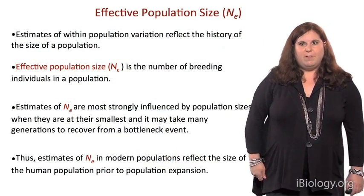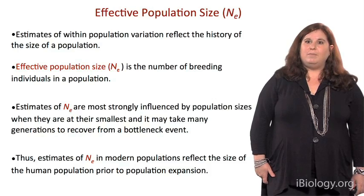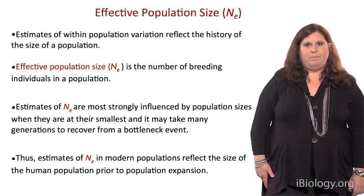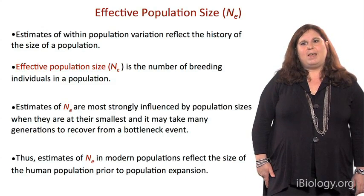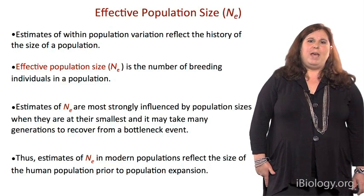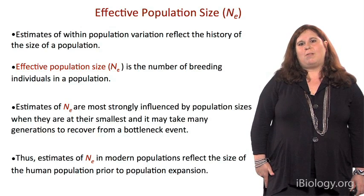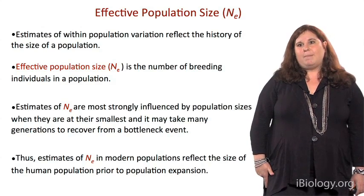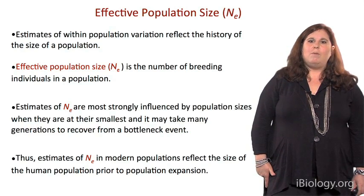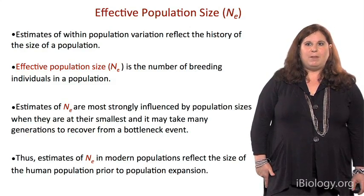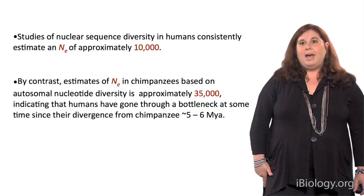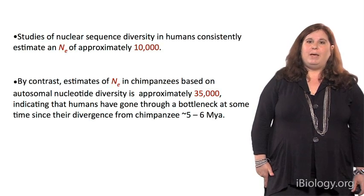The pattern of variation that we see in the human genome is also dependent on the effective population size, which we distinguish as capital N sub E. And the definition of the effective population size is the number of breeding individuals in a population. Estimates of N sub E are most strongly influenced by population sizes when they're at their smallest. And it could take many generations to recover from a bottleneck event. Estimates of N sub E in modern populations reflect the size of the population prior to population expansion. Pretty consistently, studies of nuclear sequence diversity in humans have estimated an effective population size of about 10,000.